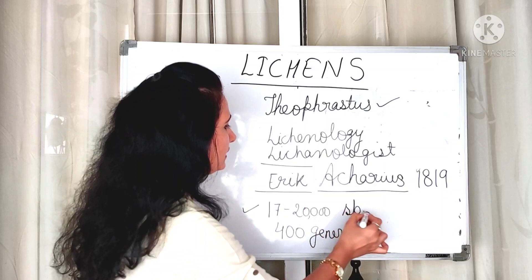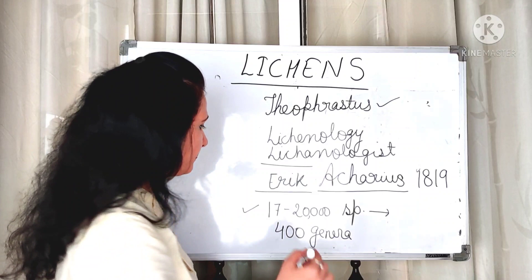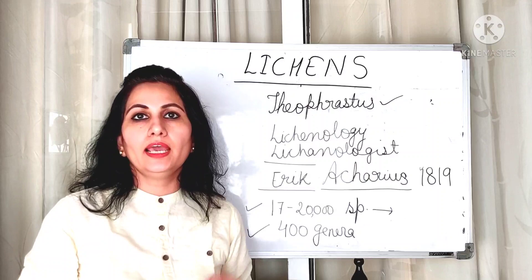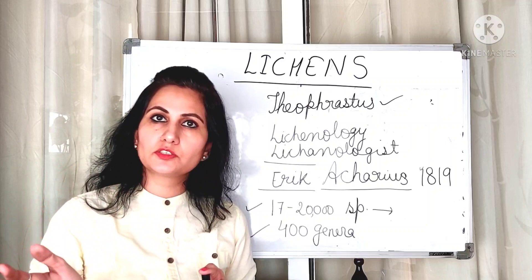Now we will talk about the occurrence of lichens. Till now we have seen around 17,000 to 20,000 species of lichen worldwide. They are cosmopolitan and there are around 400 genera of lichen found worldwide. Lichens are generally found on exposed rock surfaces as well as on glass windows, tree trunks, and branches of trees.